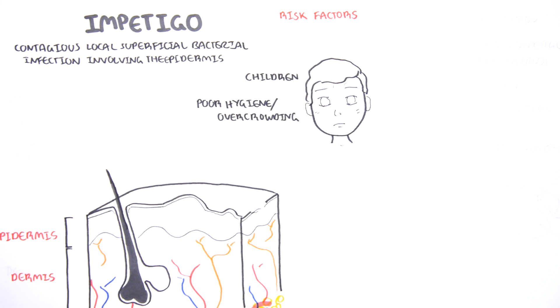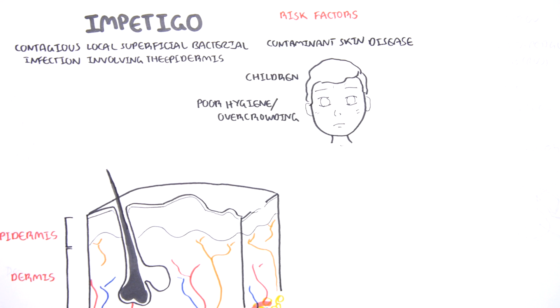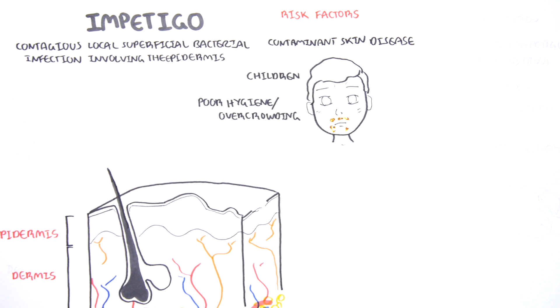Contaminant skin diseases such as dermatitis can be risk factors. The classical presentation of impetigo is a child presenting with crusting lesions around the mouth or in the upper limb, such as your hands. Let's take a closer look at what happens in this area.